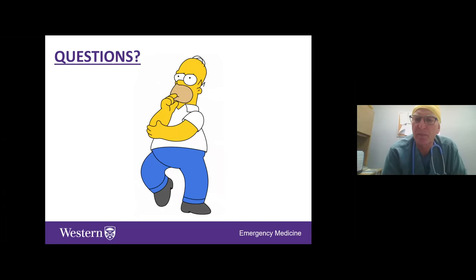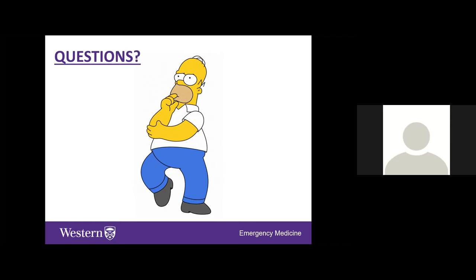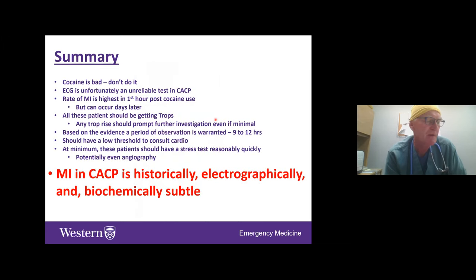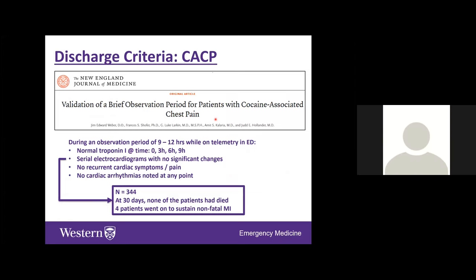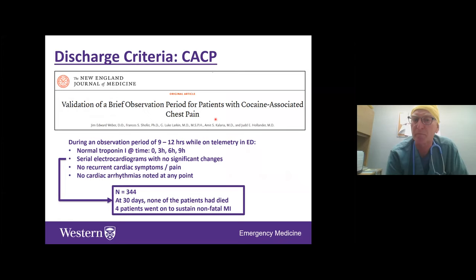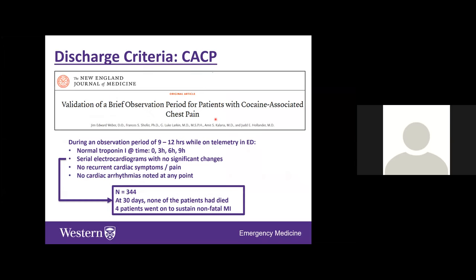Audience question from John: he asks whether the study used standard troponin or high-sensitivity troponin, since high-sensitivity might decrease the required observation time. Eric confirms the study used high-sensitivity troponin. He acknowledges four troponin time points may be overkill but notes the authors prioritized safety of discharge criteria over ED throughput efficiency. He suggests two or three troponins at six-hour intervals might be reasonable if the patient is stable.